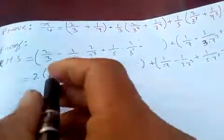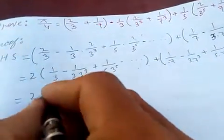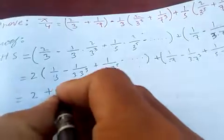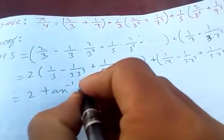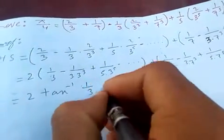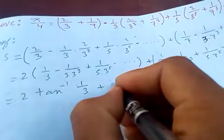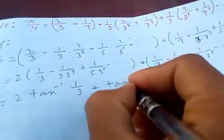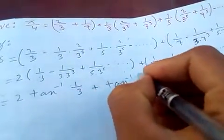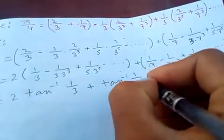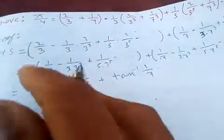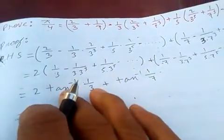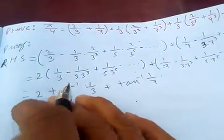So from Gregory's series, this is the Gregory series form. So we get 2·arctan(1/3) plus 2·arctan(1/7).